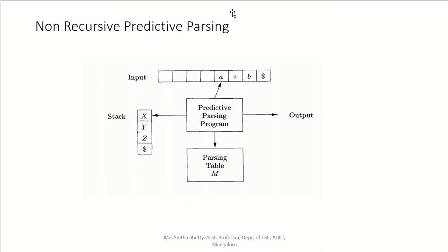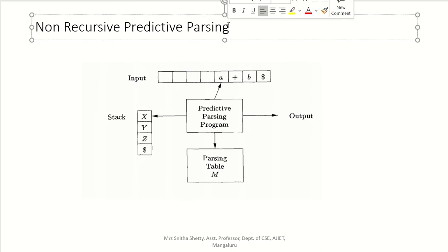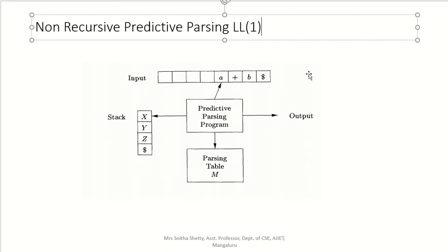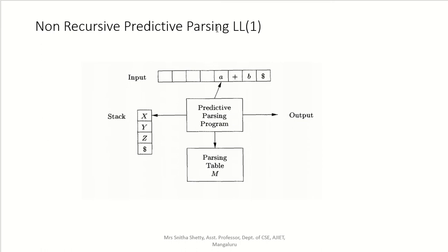The non-recursive predictive parser is also known as LL1 parser. The meaning of LL1: the first L means left to right — we are scanning the input from left to right. The second L means it follows leftmost derivation. And 1 means the number of lookahead characters — we are looking at one character at a time.